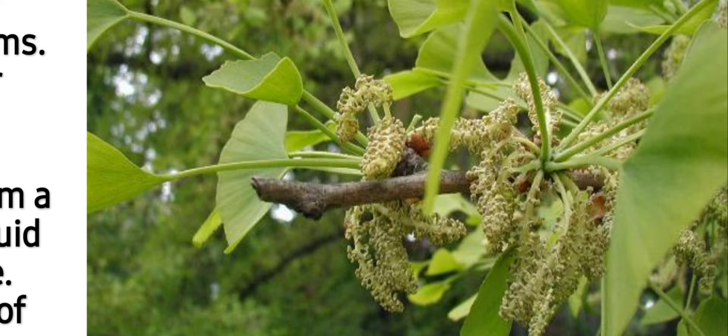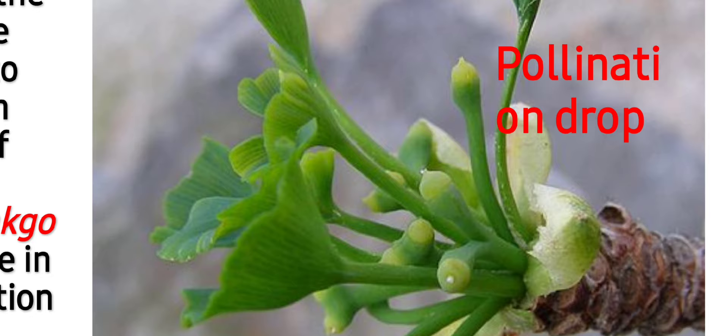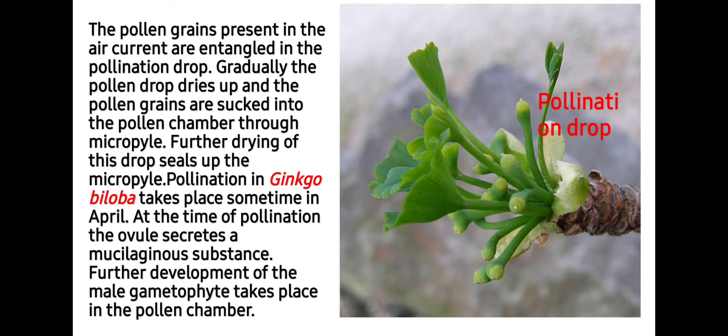Here is an image of a mature male cone of Ginkgo biloba having pollen grains. The pollen grains present in the air current are entangled in the pollination drop — you can see in this image the drop at the top of the ovule. Gradually the pollen drop dries up and the pollen grains are sucked into the pollen chamber through the micropyle.